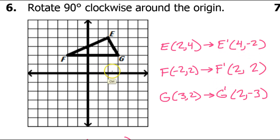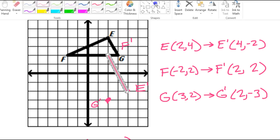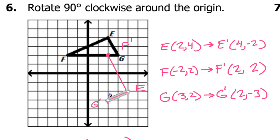Let's plot these points. 4 comma negative 2 is e prime. 2 comma 2 is f prime. 2 comma negative 3 is g prime. Then you just connect those dots.